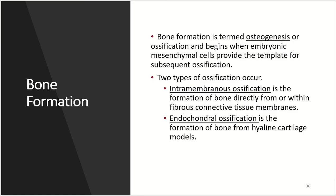Bone formation is termed osteogenesis, also called ossification, and this begins when embryonic mesenchymal cells provide the template for the subsequent ossification. There are two types of ossification. First, we have intramembranous ossification, which is the formation of bone directly within a fibrous connective tissue membrane. Next, we have endochondral ossification, which is the formation of bone from hyaline cartilage models.